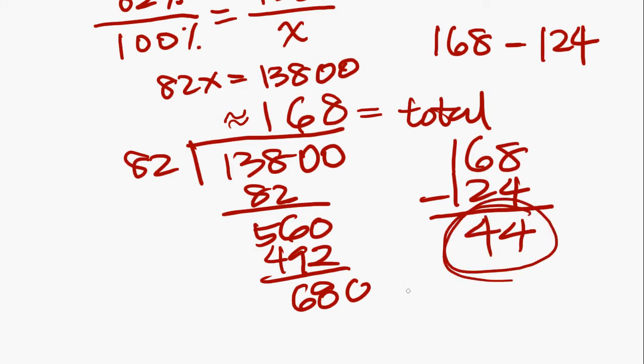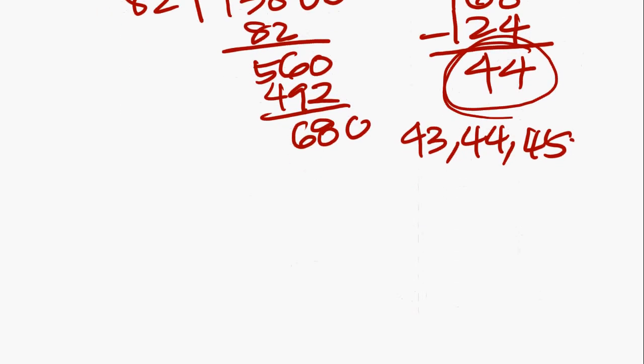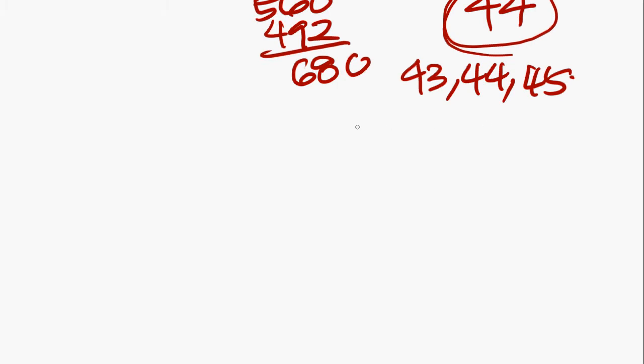And the answer choices, you know, it might give you 43, it might give you 44, it might give you 45. You never really know what the answer choices are going to give you. You just have to find the one that is the closest to the answer. In this case, there actually is an answer choice for 44. And that is E. Boom. Alright.